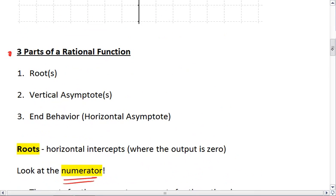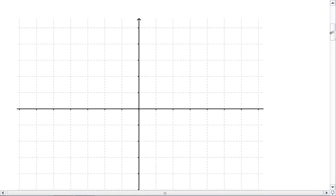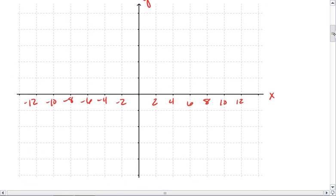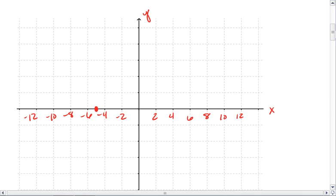Let's go up here. We have roots at negative 5 and 8. At negative 5, we bounce, and at 8 we're crossing.